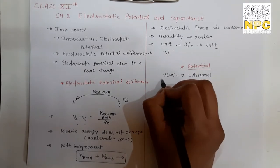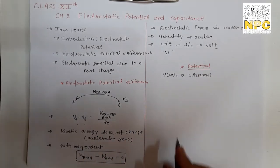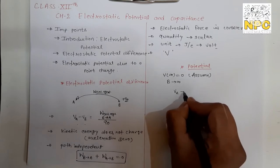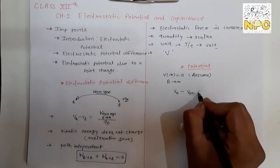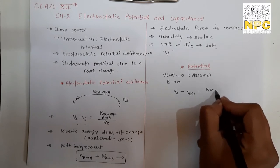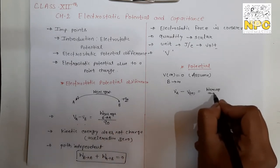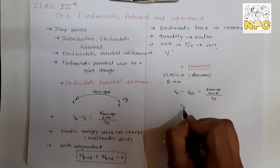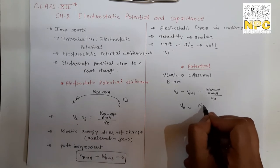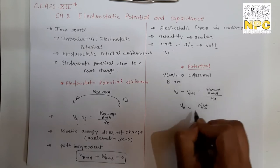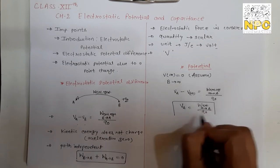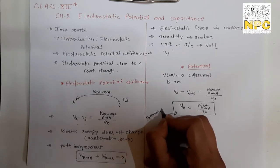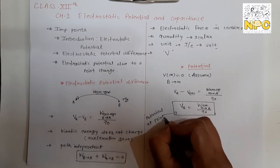In all physics books you will find this: 'assuming V at infinity is zero.' So in the equation VA minus VB, replace B with infinity. Then VA minus V∞ equals the work done by the external agent in moving a unit charge from infinity to point A divided by Q₀. Since V∞ = 0, VA equals work done by external agent from infinity to A divided by Q₀.